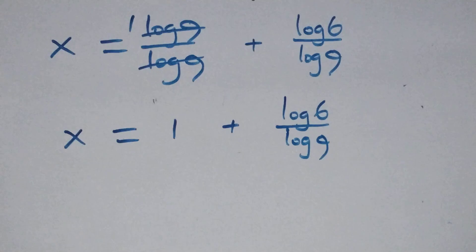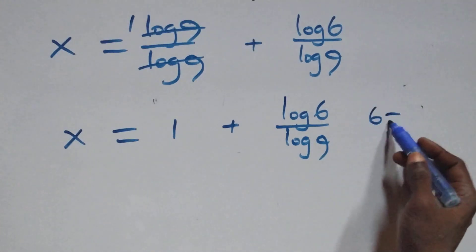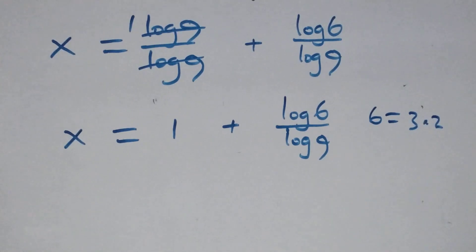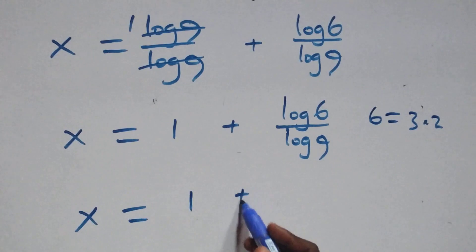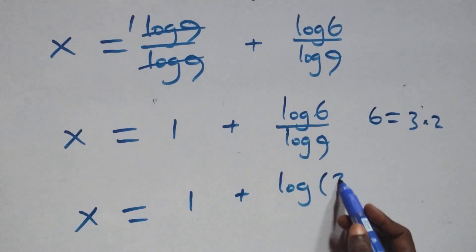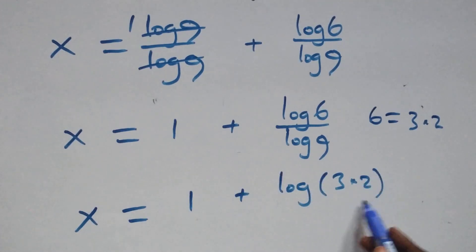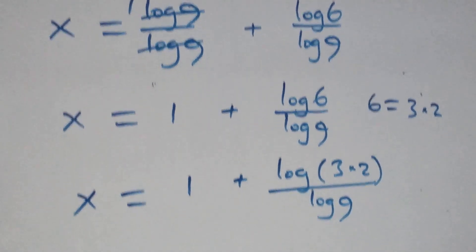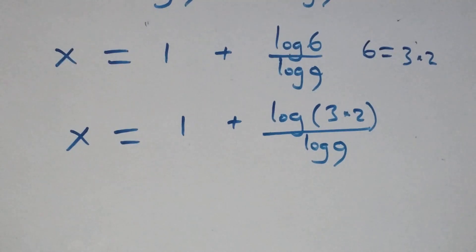Then, also here, we can write 6 as 3 times 2. Which implies this becomes x equals to 1 plus log 3 times 2 over log 9. Watch this video today and give me a thumbs up, put a comment, share this video and also subscribe.